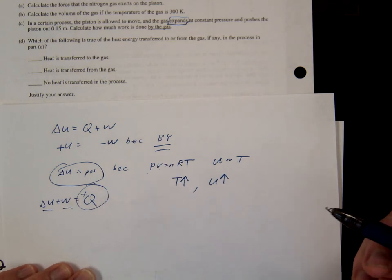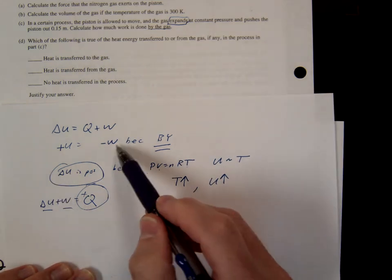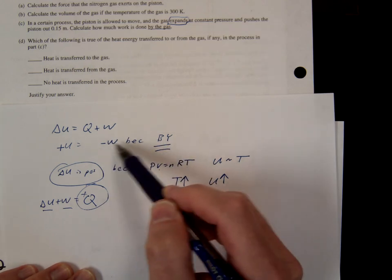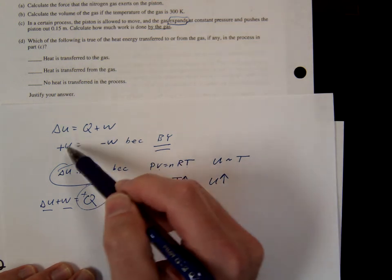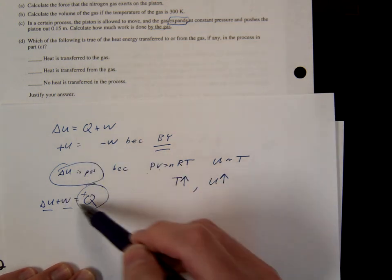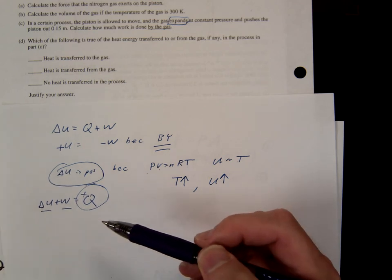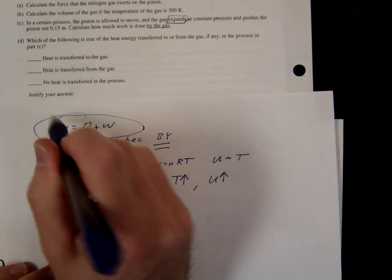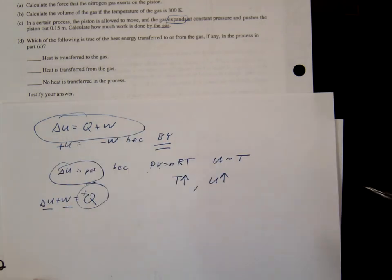And then your explanation would basically be because work is removed, or work, sorry, work is done by the system with the negative W and temperature goes up, meaning delta U is positive. Therefore, Q has to be added, according to the first law of thermodynamics. Whenever they ask you to explain, you should automatically go to this. They almost always ask this. Go to delta U. Use that to help you in your explanation.